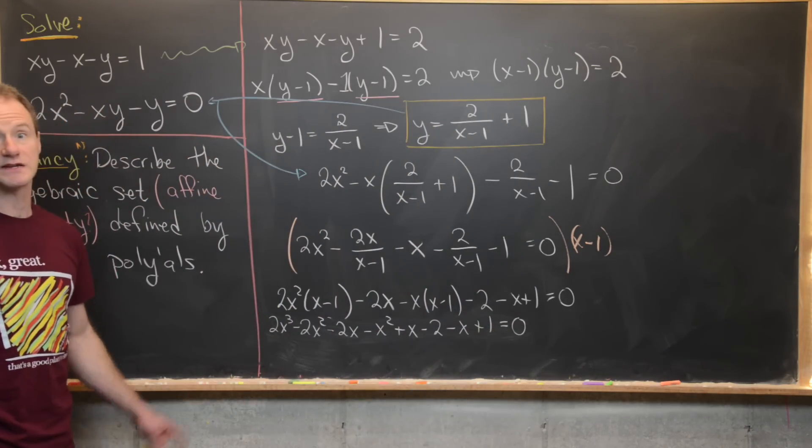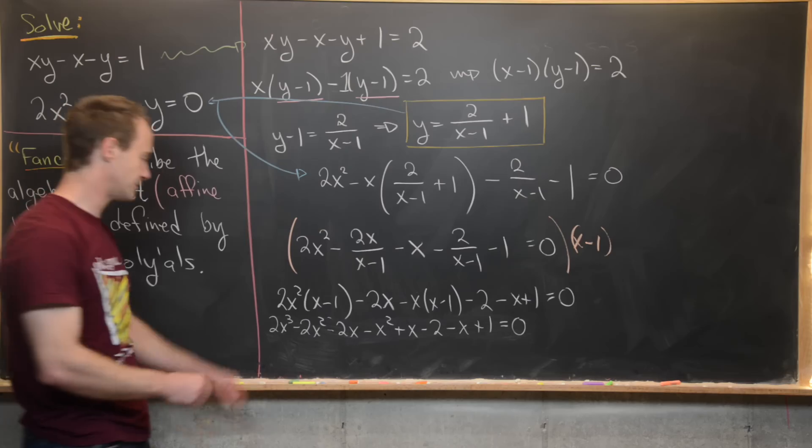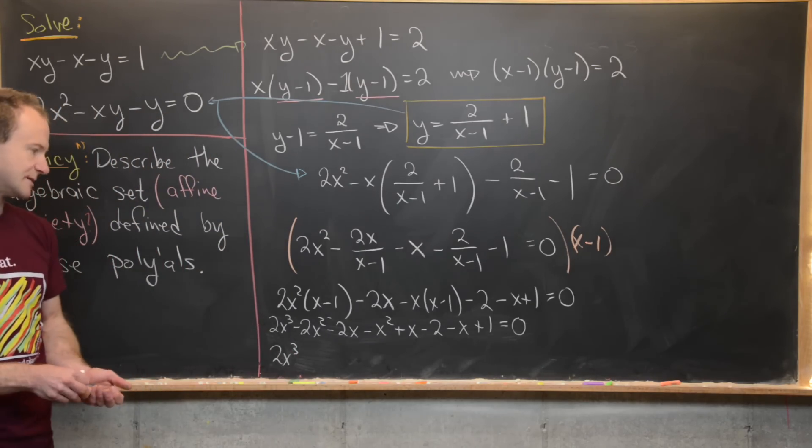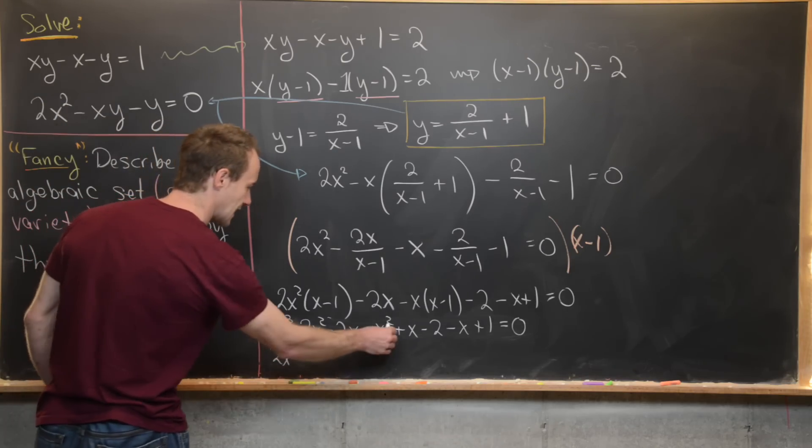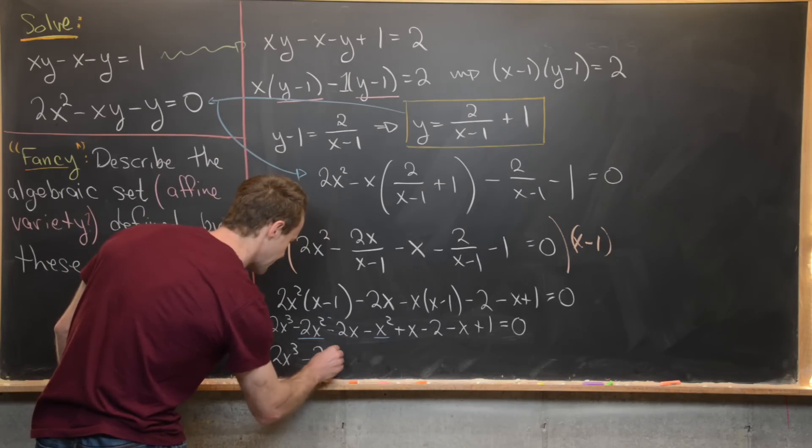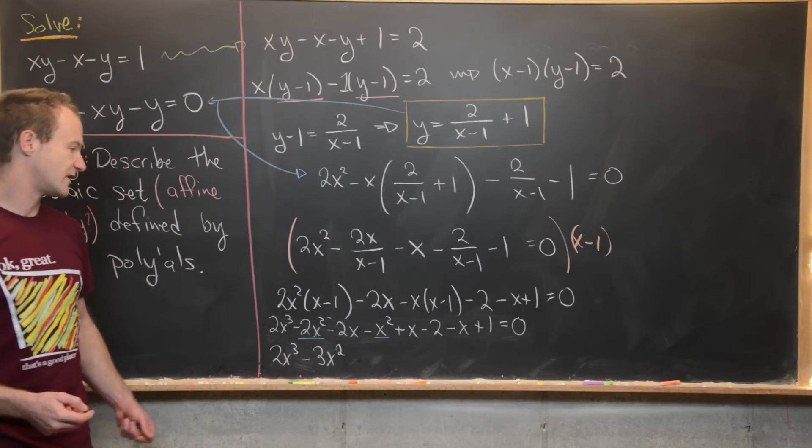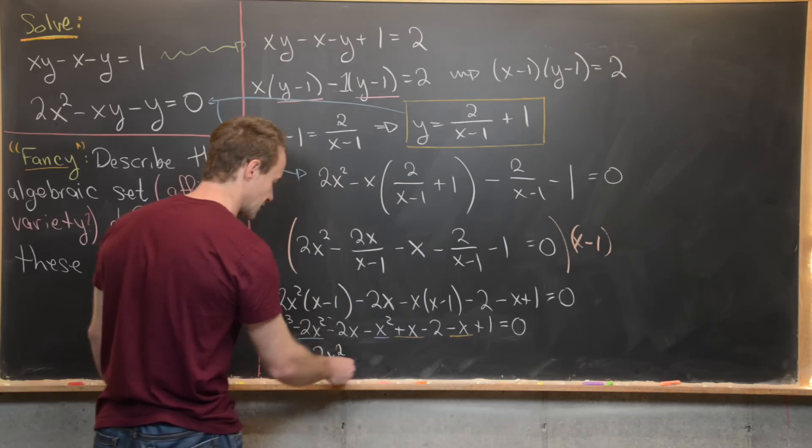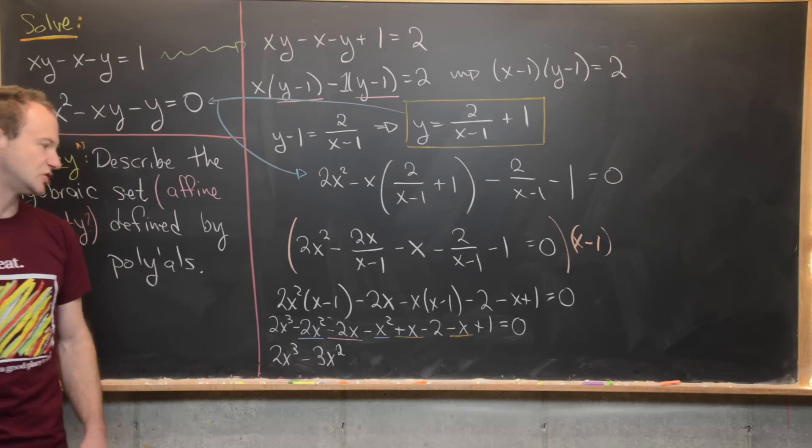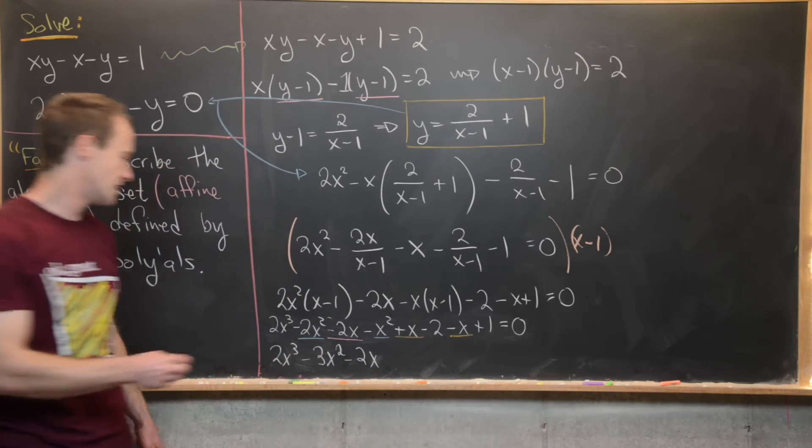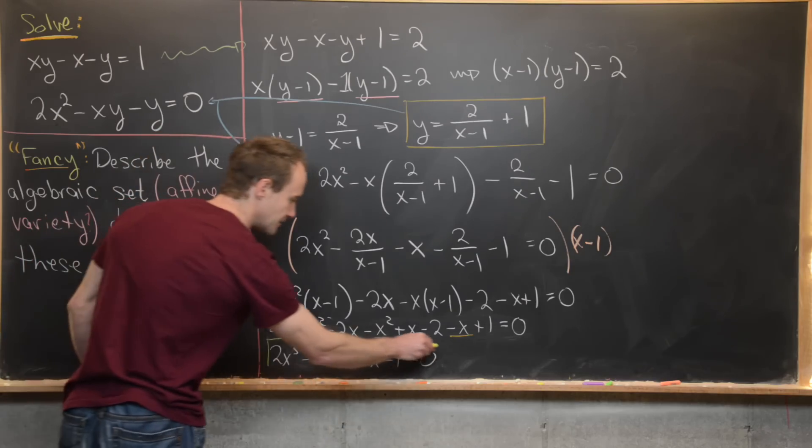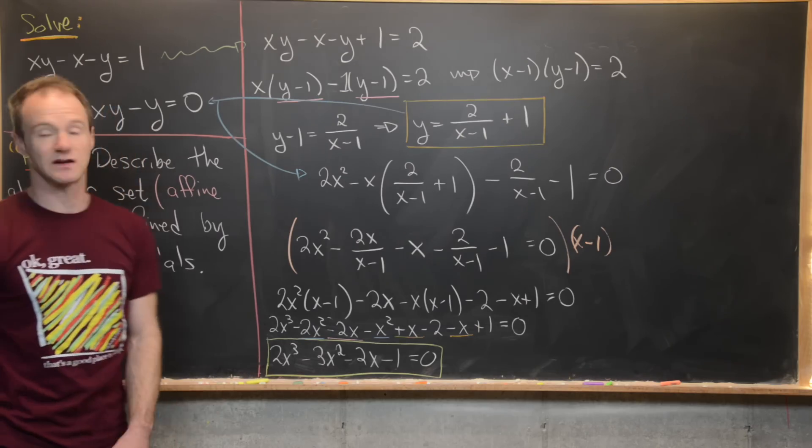Now we can start combining like terms. So notice there is only one x³ term. And so that's going to give us this 2x³. Notice we have two terms that are attached to x². We have this one and this one. So those are going to combine together to give us -3x². Then we've got a couple of x terms. So notice that this plus x and this minus x will cancel, leaving us only with this -2x. So we've got a -2x. And then for constants, we've got a -2 and a +1. So that's going to give us a -1 = 0. So check it out at the bottom here. We've got a cubic polynomial that our x component must satisfy.